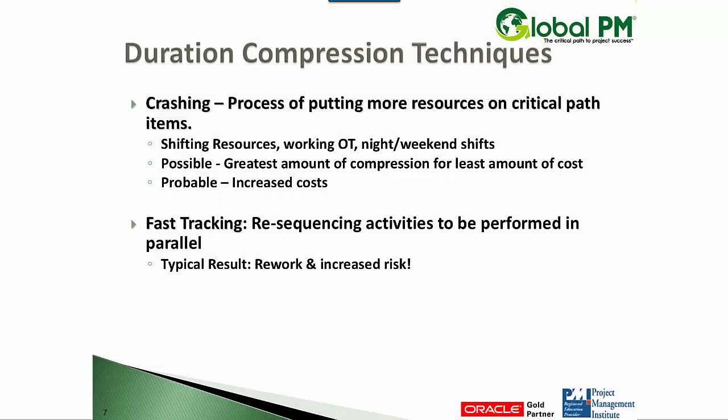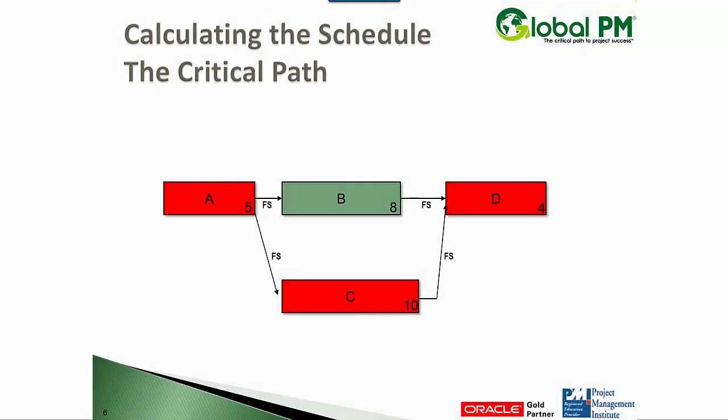If the previous slide was what we were shooting for, it was day 19, and we needed to compress this schedule. How could we go about doing that? Most people say you can either add manpower or man hours. That's true. I could look at adding more manpower to these critical activities. I could look at increasing the work hours on the resources of these critical activities. I might also look at shifting resources from B to C, for example.